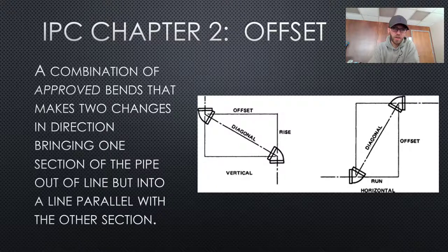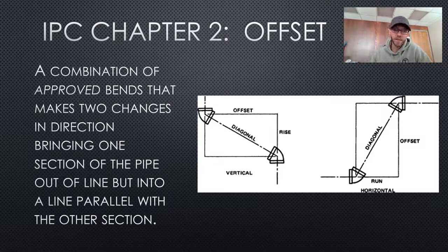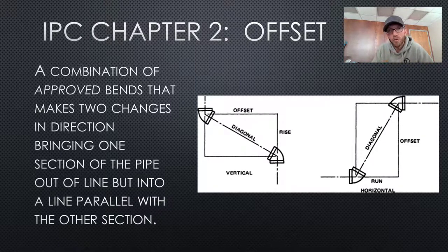The first thing we want to make sure that you're clear on is that you understand what an offset is. This definition comes from the International Plumbing Code, Chapter 2. An offset is a combination of approved bends that makes two changes in direction, bringing one section of the pipe out of line but into a line parallel with the other section. That sounds a little complicated. Let me sum this up. You have a pipe. It needs to move around something. So we're going to move it either horizontally or vertically. We use a couple of fittings, create an angle and voila, we have an offset.